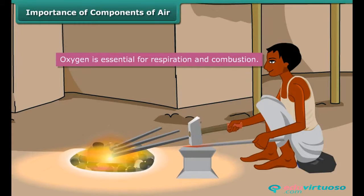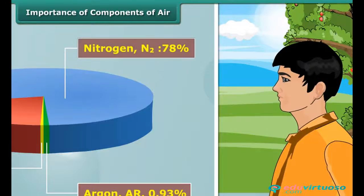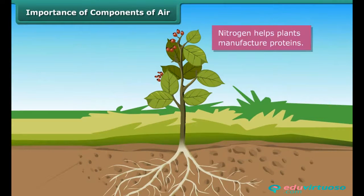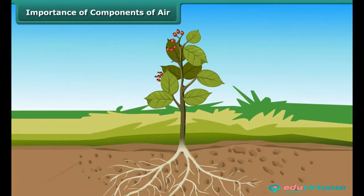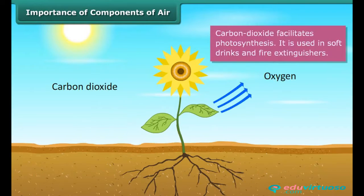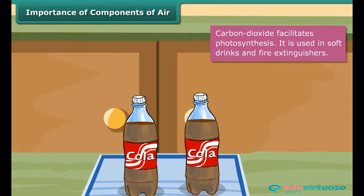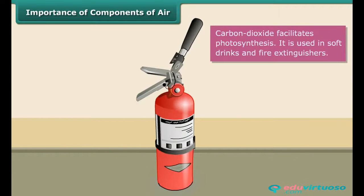Nitrogen is present in proteins, which are vital for living beings. It helps plants manufacture their proteins and does not support combustion. Carbon dioxide facilitates photosynthesis. It prevents grains from being destroyed by insects. As it dissolves in water, it is used to prepare soft drinks. Fire extinguishers also contain carbon dioxide.